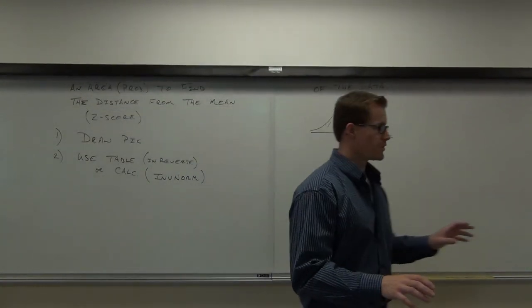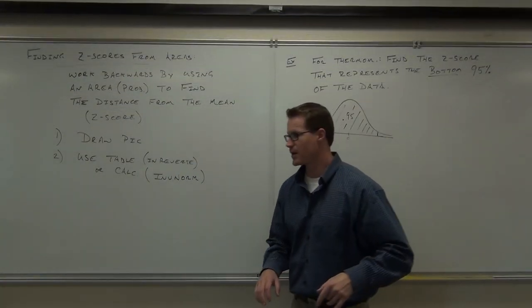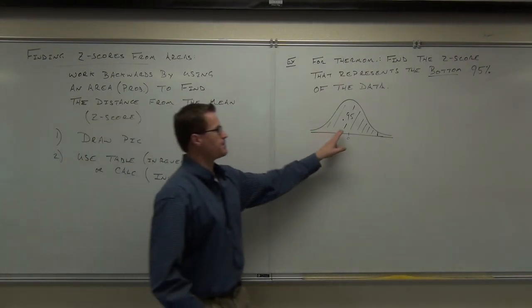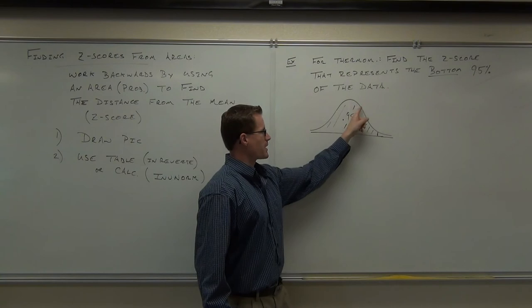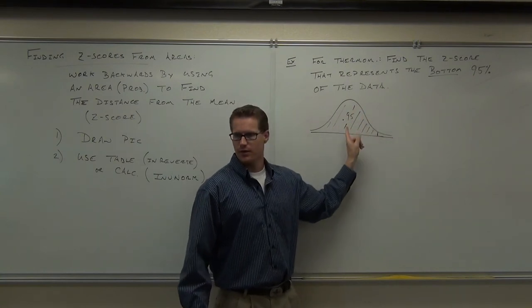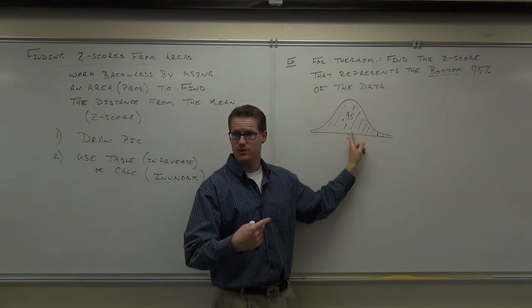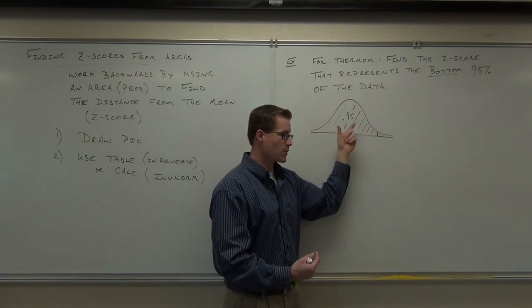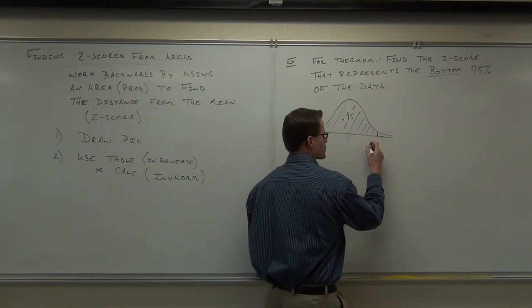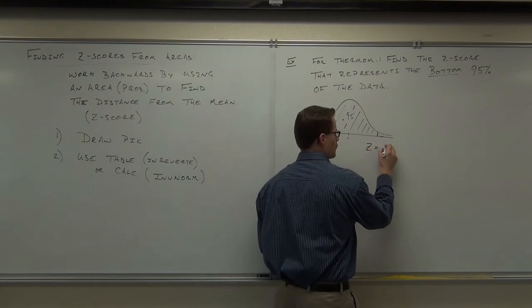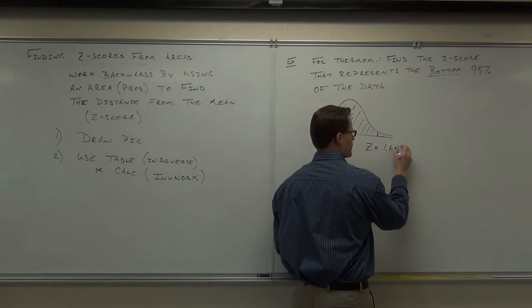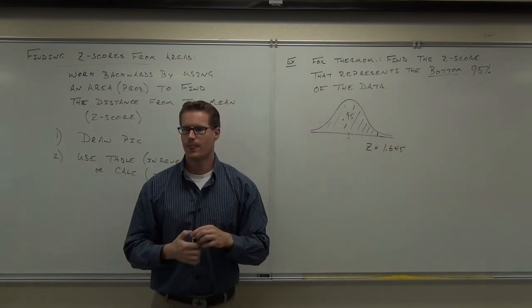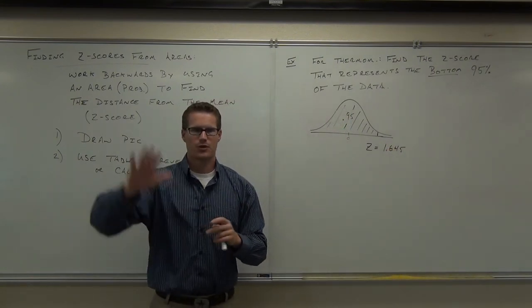Here's what you just did on your table. Both of you all had your table out. I'm requiring you to bring that from now on. We just looked up this area. We noted that we looked up the area to the left. That was 0.95. Remember, it was always area to the left, correct? So this worked for us because all the area we wanted was to the left of that score. We looked up the area. It gave us a z-score of 1.645. You with me?